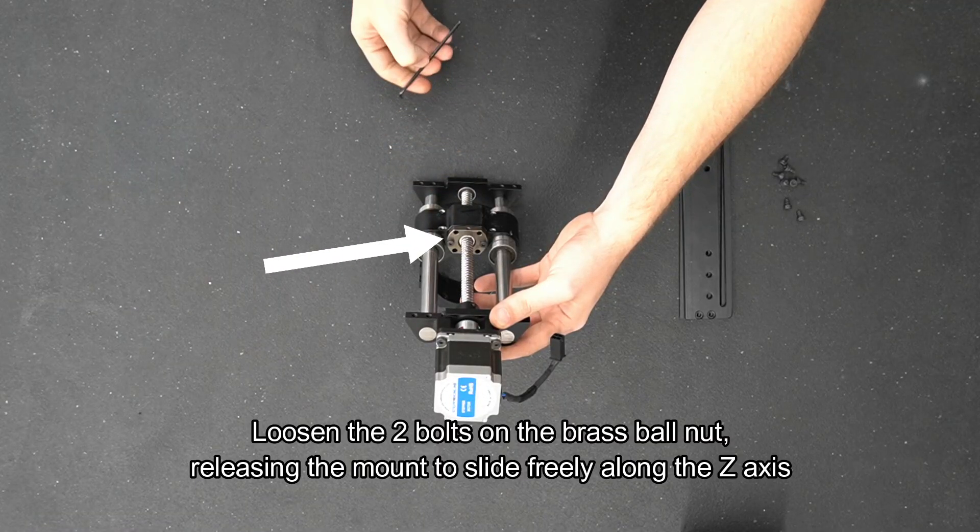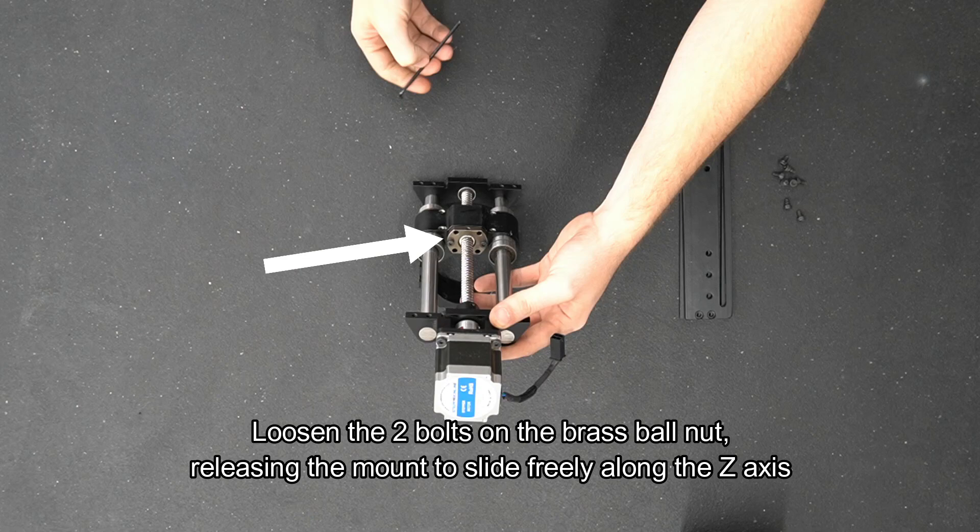Loosen the two bolts on the brass ball nut, releasing the mount to slide freely along the Z axis.